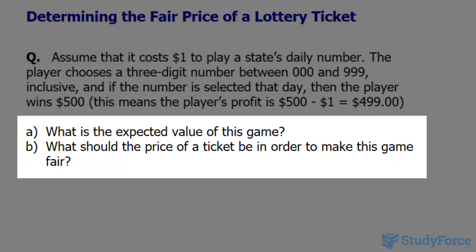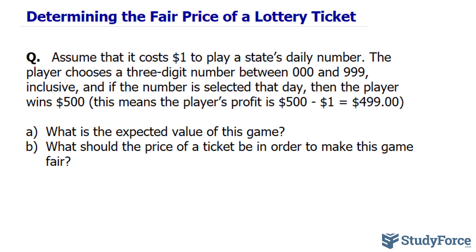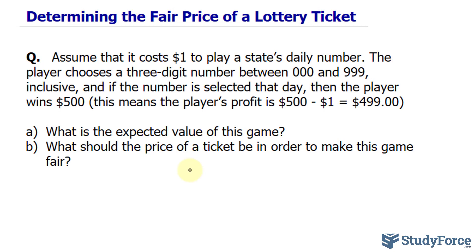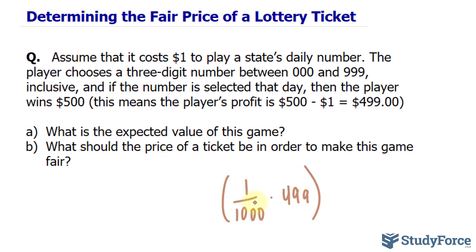We want to know what is the expected value of this game, and what should the price of the ticket be in order to make this game fair? To calculate the expected value of any game, we multiply the probability times the value associated with that probability. In this case, the probability of winning is 1 in 1,000 — it's 1,000 as opposed to 999 because 000 is one of the possibilities. So the probability of winning is 1 in 1,000, and if you win, you get $500 minus what you put in, that's $499.